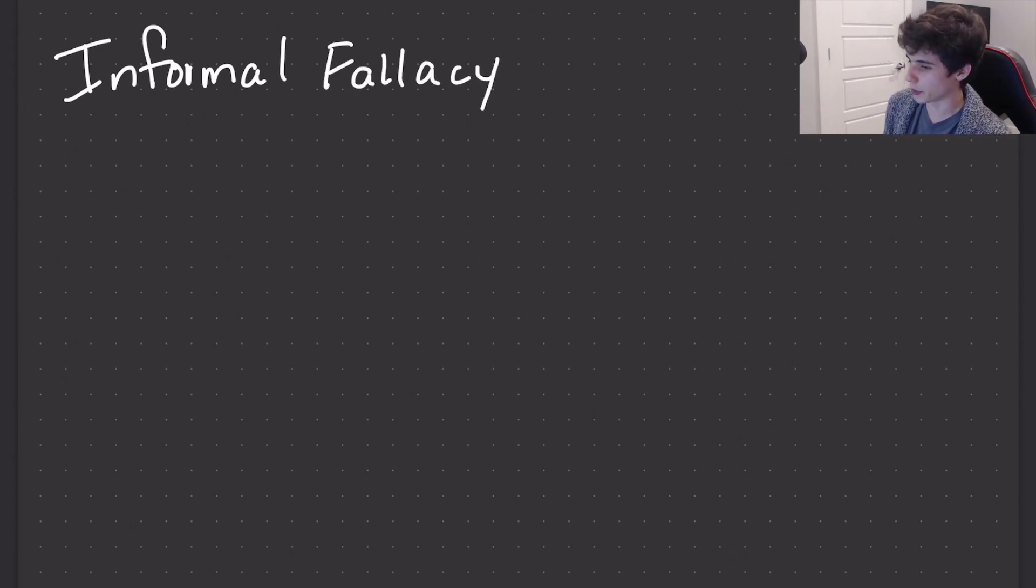So let's move on to the informal fallacy. Now, informal fallacies, if you just look at the variables. So if I said something, let's go back to modus ponens. If A, then B. A, therefore B. You're not going to be able to identify an informal fallacy from just that.